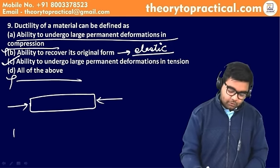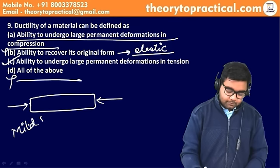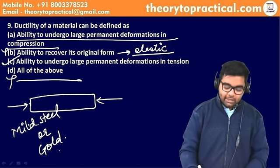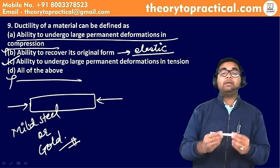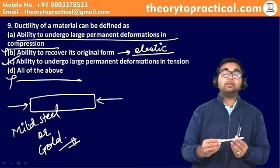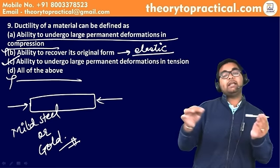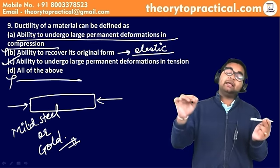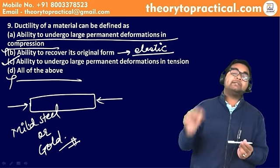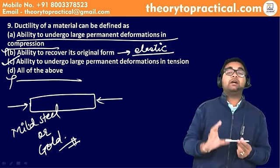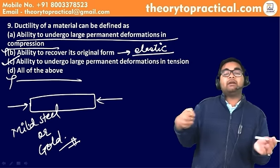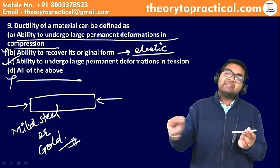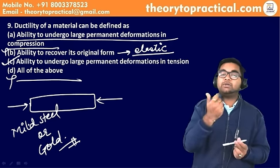Ductile material — जैसे mild steel और gold। इनका stress-strain diagram देखें तो इन्हें खींचते जाएं, यह लंबे खिंचते चले जाते हैं, एक point के बाद fracture point आता है। Ductile materials को पतले-पतले wires में convert किया जा सकता है।